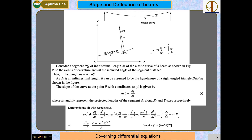If we differentiate equation tan θ = dy/dx with respect to x, we get sec²θ · dθ/dx = d²y/dx². Replacing dθ with ds/r, we get sec²θ · (ds/r) · (1/dx) = d²y/dx². From here we write sec³θ / r = d²y/dx², since ds/dx = sec θ.